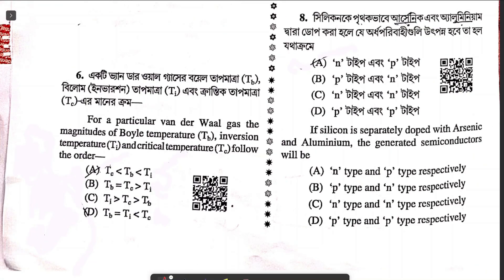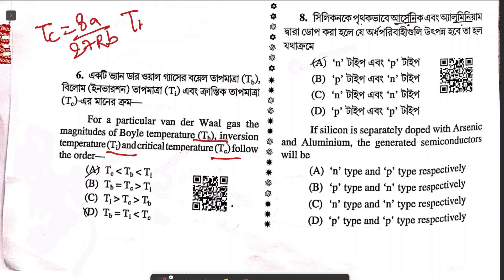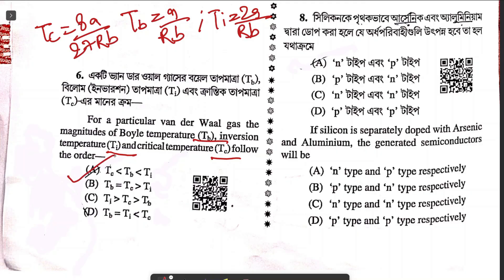Question six is a mathematical question about Van der Waals gas. You must know: Tc = 8a/27Rb, Tb = a/Rb, and Ti = 2a/Rb. When you relate these three values, the answer is option A.